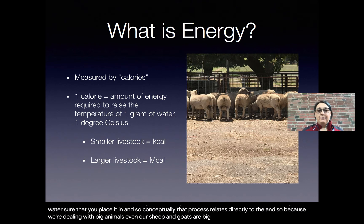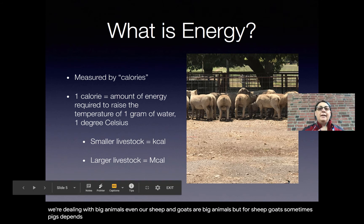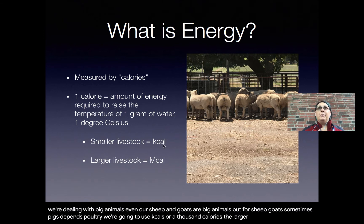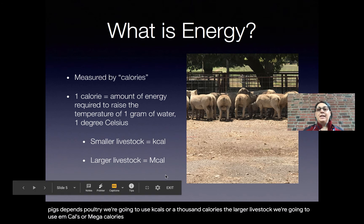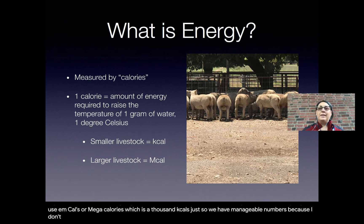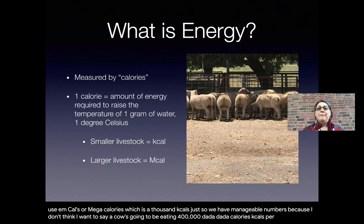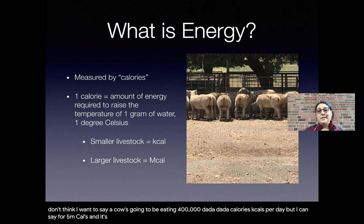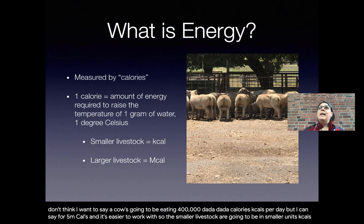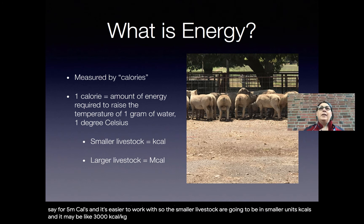Because we're dealing with big animals — even sheep and goats are big animals — we use kilocalories (kcal), which are 1,000 calories, for smaller livestock like sheep, goats, pigs, and poultry. For larger livestock we use megacalories (Mcal), which are 1,000 kcal, just so we have manageable numbers. I'd rather say a cow needs 4 or 5 Mcal per day than 400,000 calories. Smaller livestock are expressed in kcal, perhaps around 3,000 kcal.